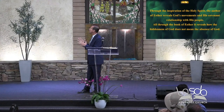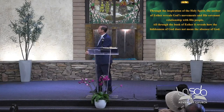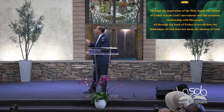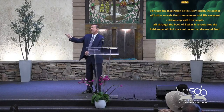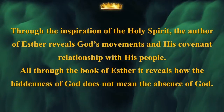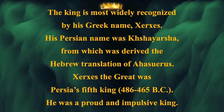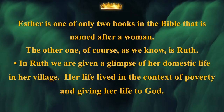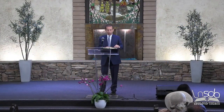Through the inspiration of the Holy Spirit, the author of Esther reveals God's movements and His covenant relationship with His people. This book reveals how the hiddenness of God does not mean the absence of God — and that's important, because none of us has seen God, and there are times when you feel, 'Where is God? Is He hearing my prayers?' But He's there. The king in this story is most widely recognized by his Greek name, Xerxes — his Hebrew name is Ahasuerus — and Xerxes the Great was Persia's fifth king, a proud and very impulsive ruler.